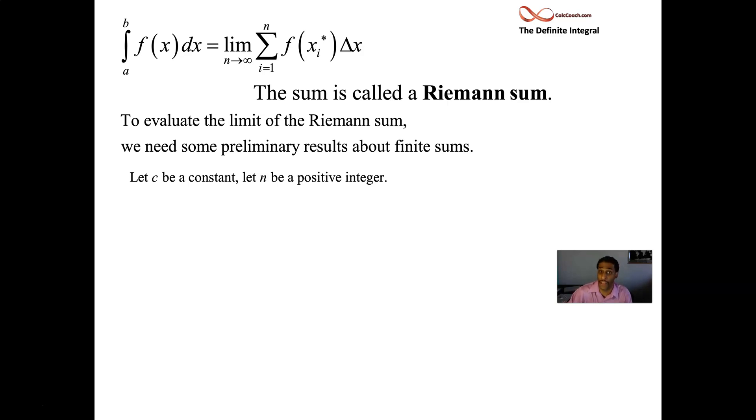So c is a constant, n is a positive integer. The first sum we need is to add up basically n copies of one. Now that can be any constant, n copies of any constant, but the sum of a constant i equals one to n is saying you have n of them and just adding them up. So you'll have n times the constant. If the constant is one, it's just n times one. If the constant is seven, you have n copies of seven. So the sum is seven times n. That's the first preliminary result that we need.